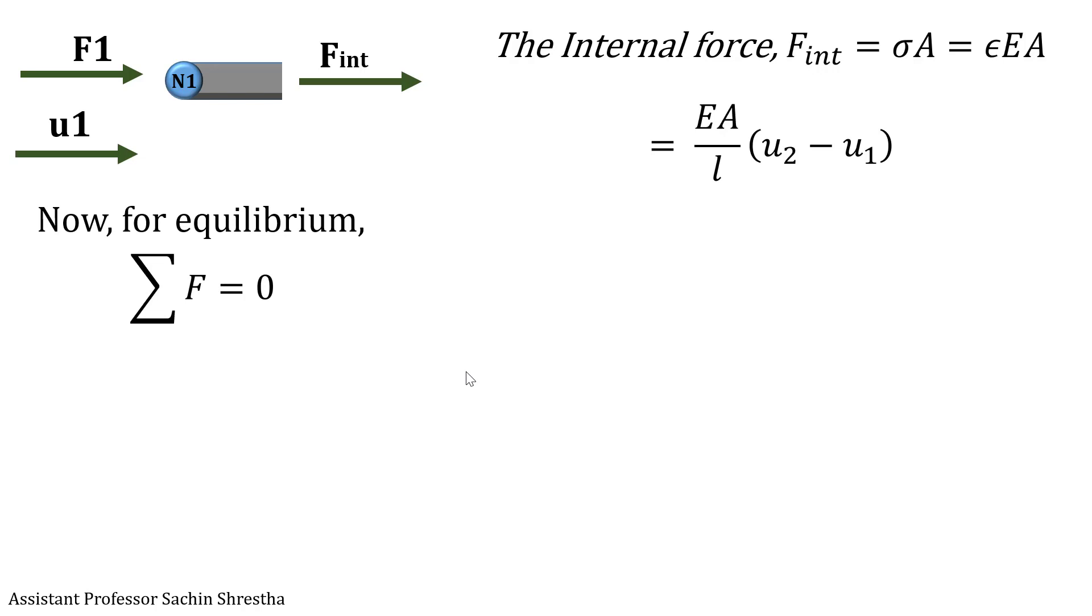We will have the relation F1 plus F2 should be equal to zero, and ultimately we will get the value for F1 as EA by L times (U1 minus U2).